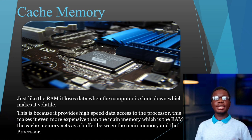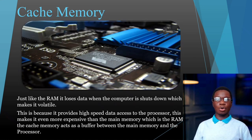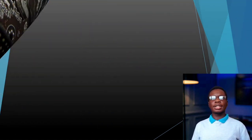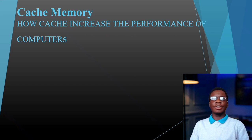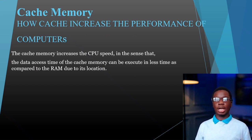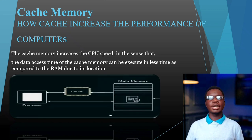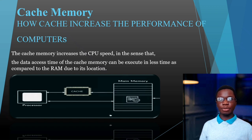For this reason, cache memory increases the performance of the computer in the sense that the time for the CPU to fetch data or execute commands is far quicker, because cache lies between the CPU and the main memory — that's the RAM.